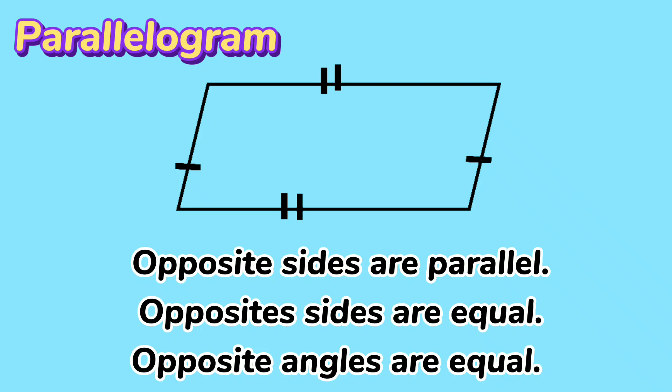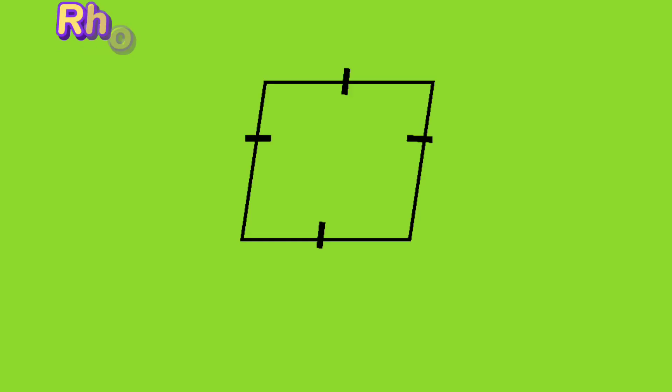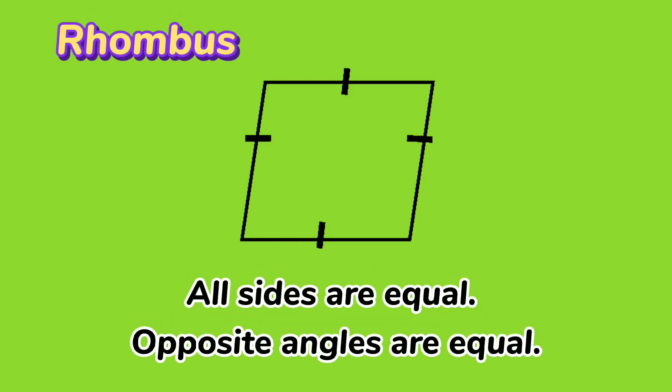The second one is rhombus. All sides are equal. Opposite angles are equal. This figure is rhombus.